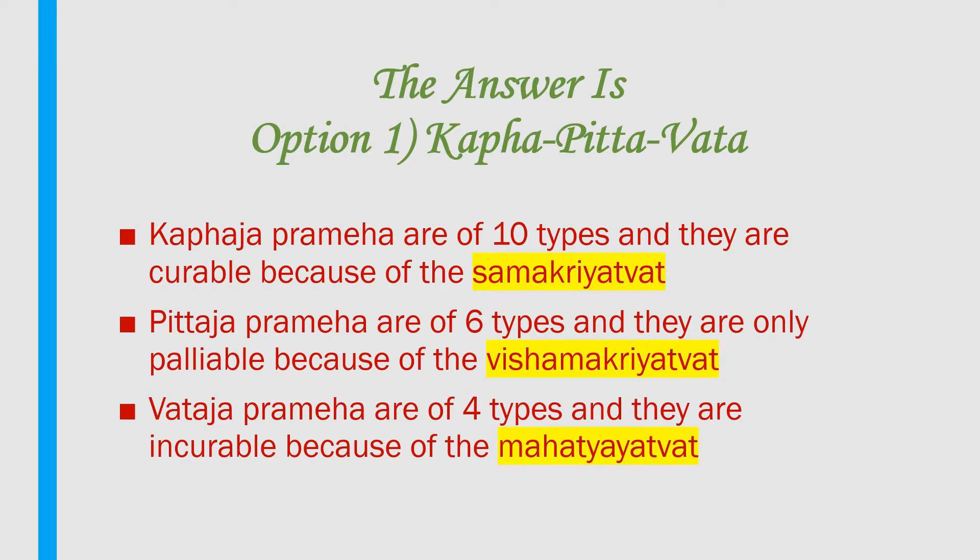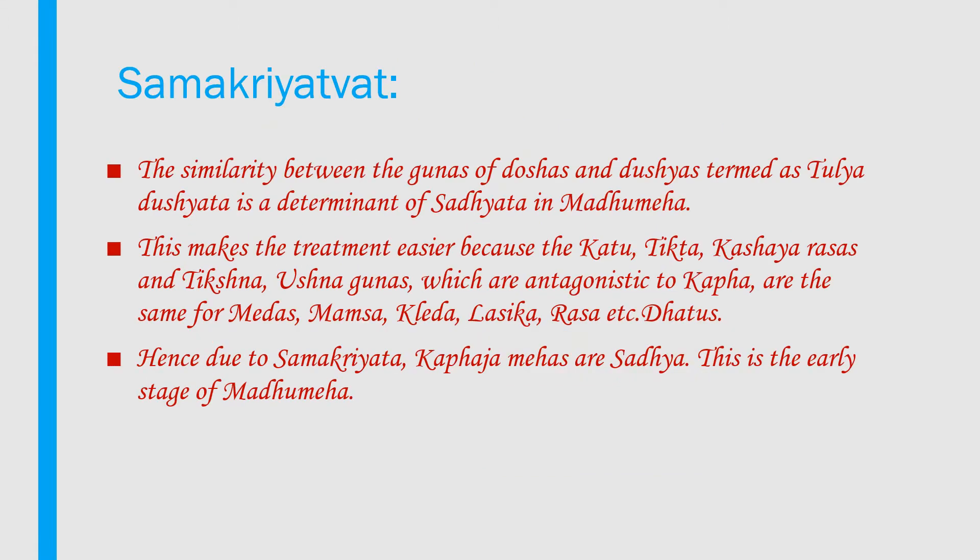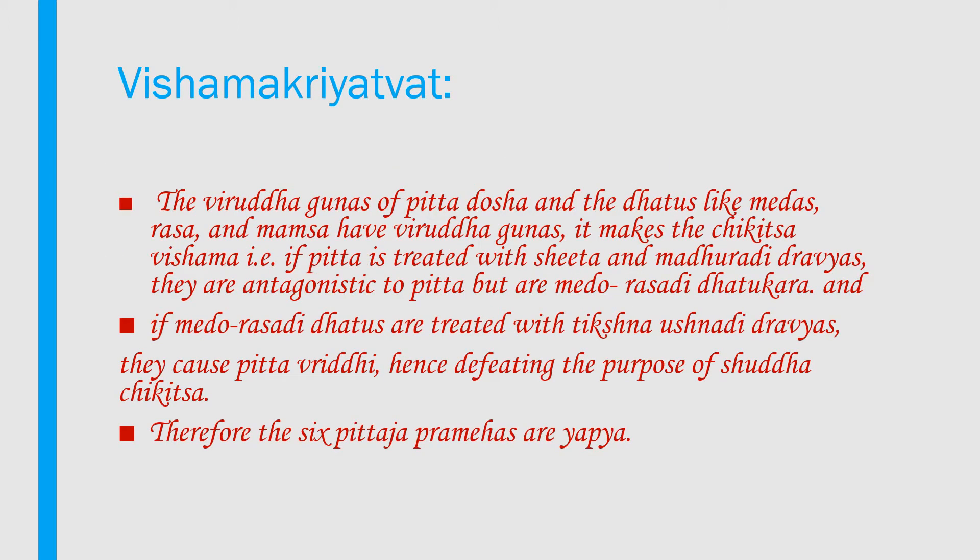Explanation: Samakriyatwa refers to the similarity between the gunas of doshas and dushyas, termed as tulya dushyada, which is the determinant of sathiyada. In madhu meha, this makes treatment easier because the kadu, tikta, kashaya rasas and tikshna, ushna gunas — which are antagonistic to kappa — are the same for medas, mamsa, kledha, lesika, rasa and other dhatus. Due to samakriyata, kappa ja meha is sathya; this is the early stage of madhu meha.